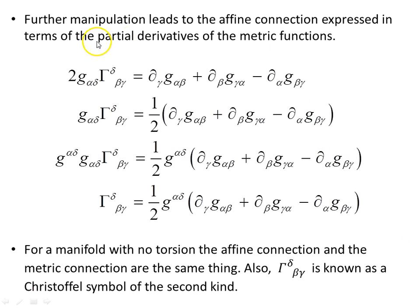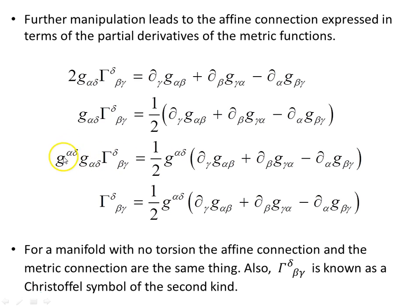A little further manipulation leads to the affine connection expressed in terms of the partial derivatives of the metric function. Here is the result from the previous page. Now divide through by two. To remove the metric G alpha beta, we multiply by the inverse — the covariant G alpha delta multiplied by the contravariant G alpha delta gives us the identity matrix. That gives us one, and over here we're left with a half times G alpha delta. The identity matrix leaves us with the affine connection — the metric connection. So our first interesting relationship is a half times the inverse metric times the partial derivatives of the metric.